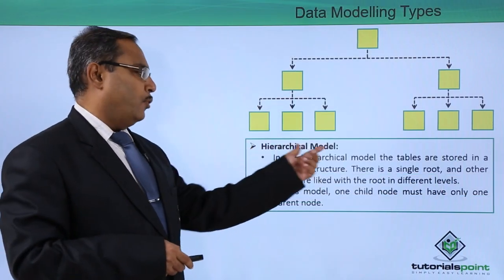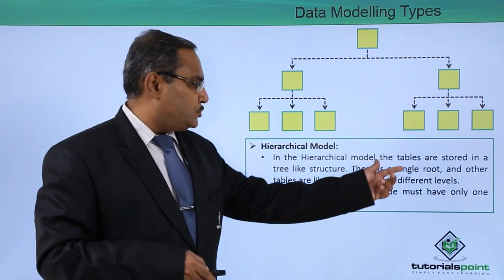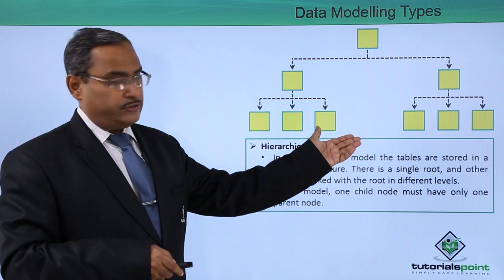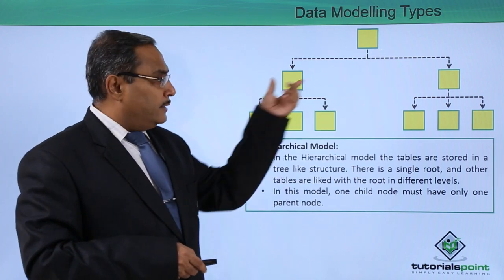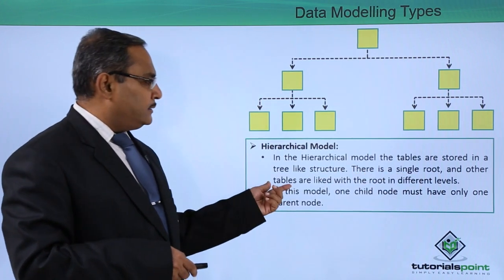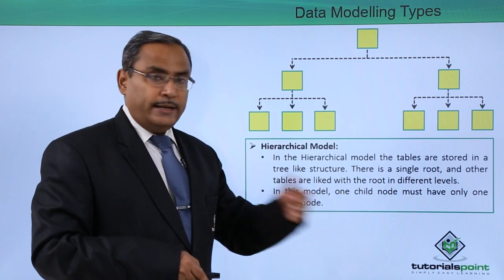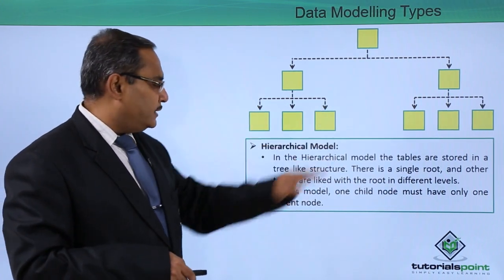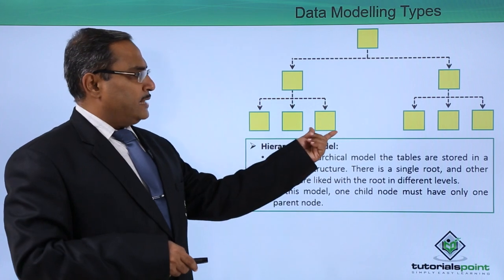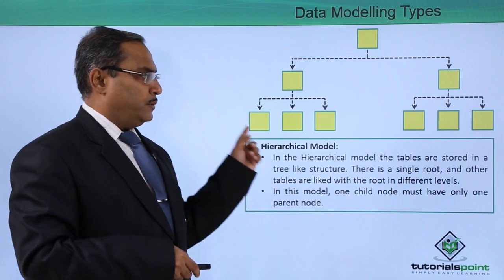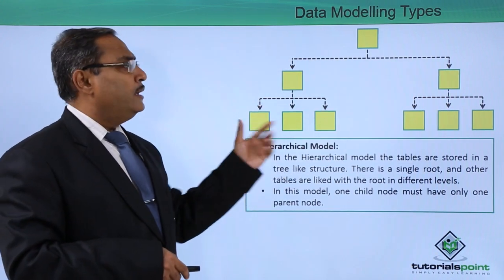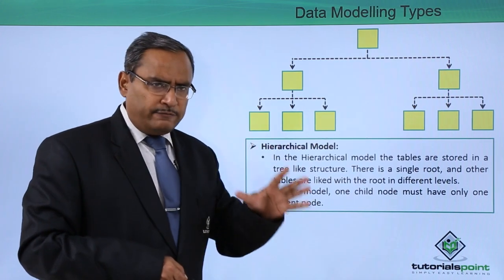Next is the hierarchical model. In the hierarchical model, the tables are stored in a tree-like structure. There is a single root node, and each child node can have only one parent node. Other tables are linked with the root at different levels, forming a tree-like hierarchical format.